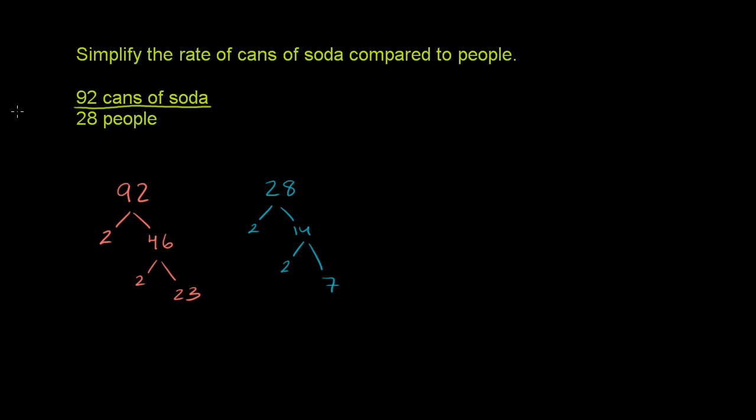So we could rewrite the 92 cans of soda as 2 times 2 times 23 cans of soda for every 2 times 2 times 7 people.